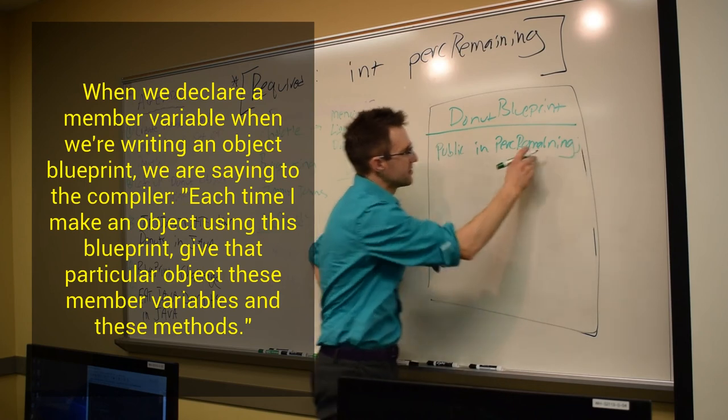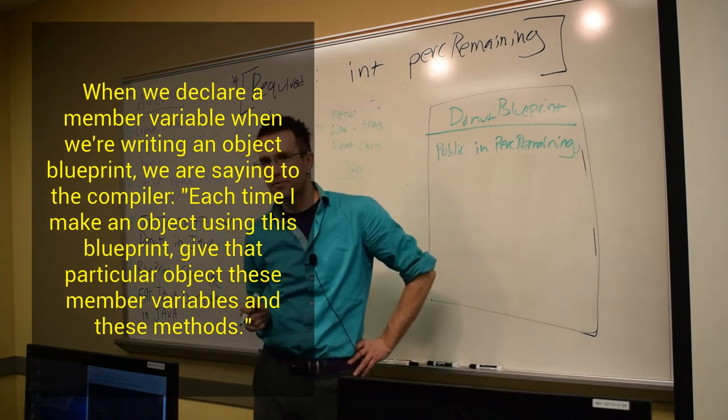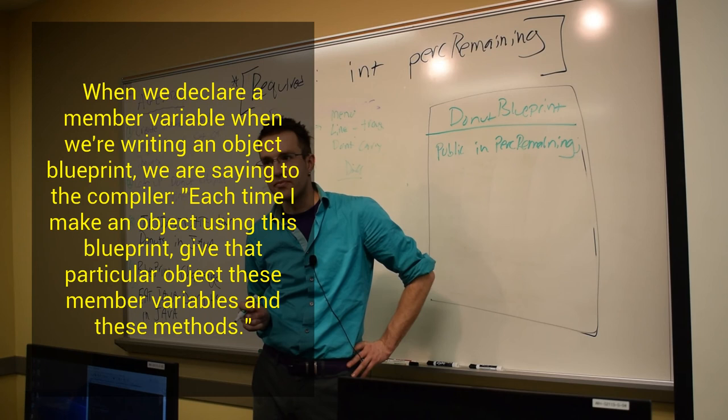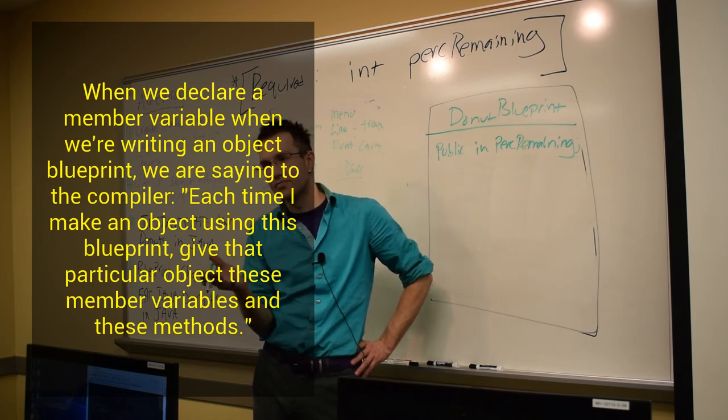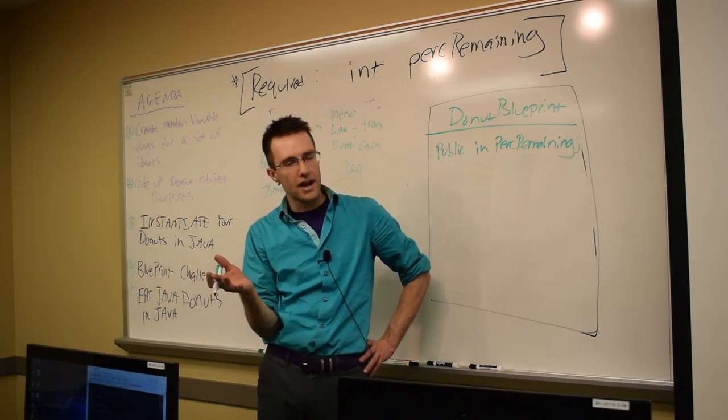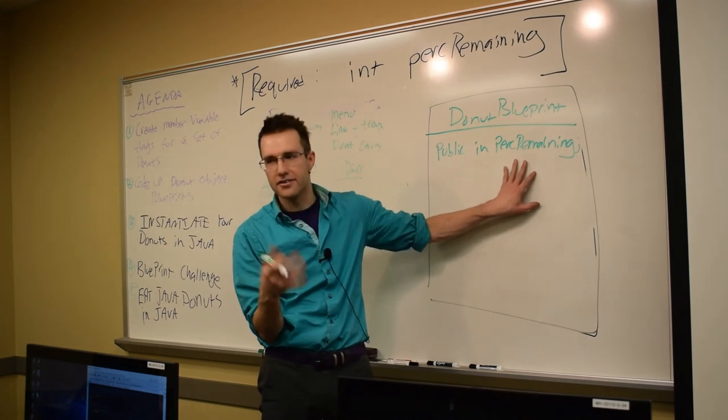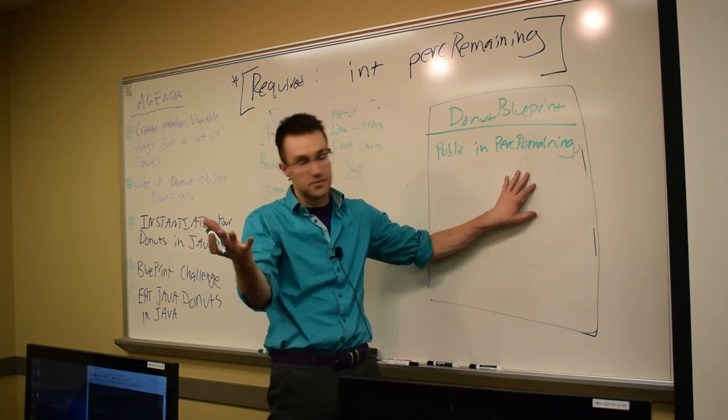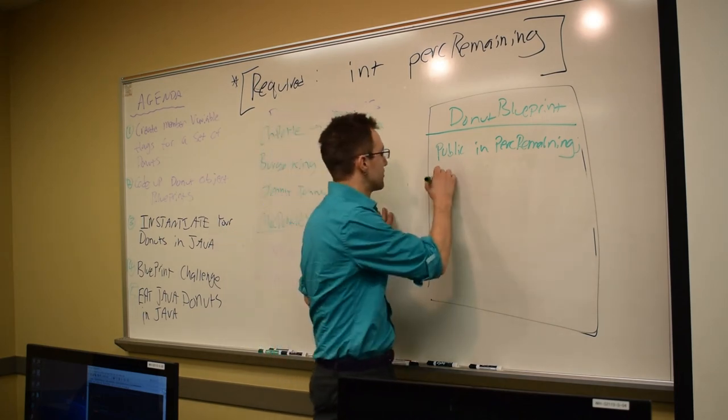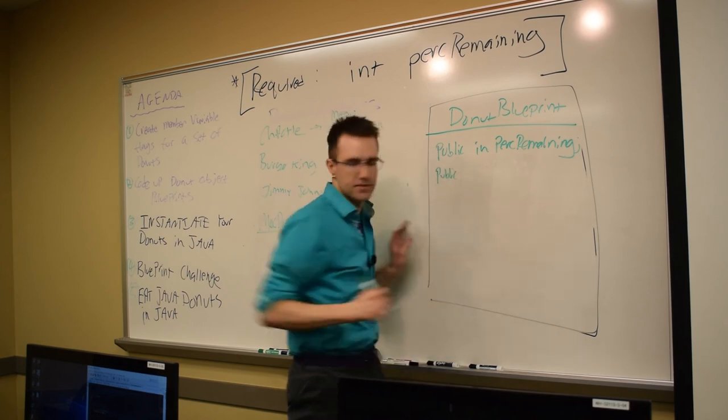Are we going to give this a value? Yeah. Initialize it to 100. Yeah, we might have a starting value that goes for each donut. That could be done. What about flavor?